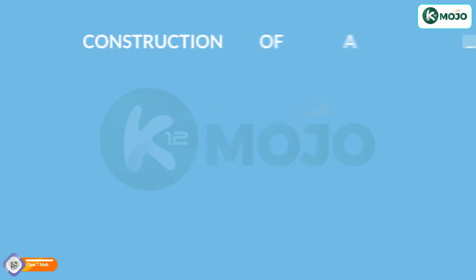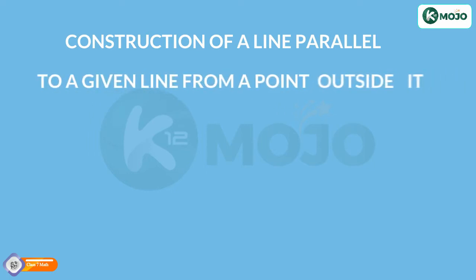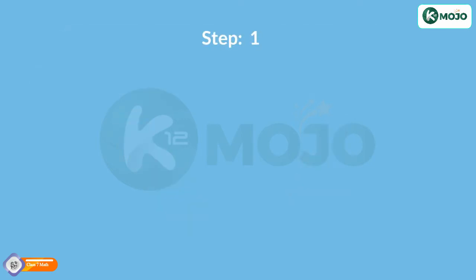Construction of a line parallel to a given line from a point outside it using ruler and compass. Step 1: Draw a line AB.